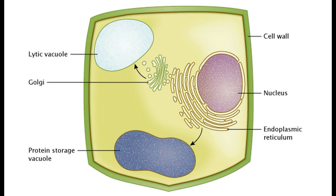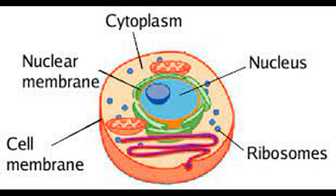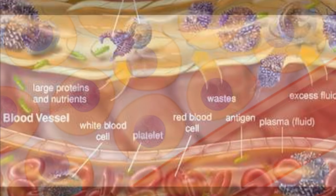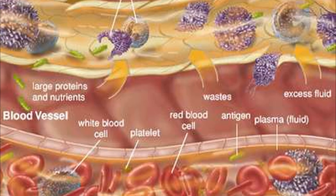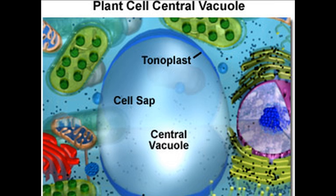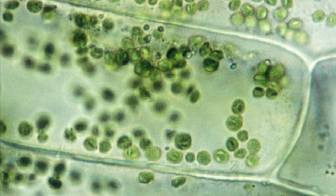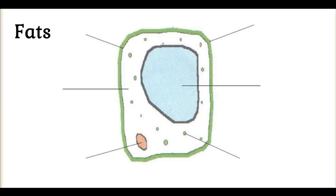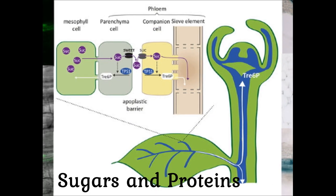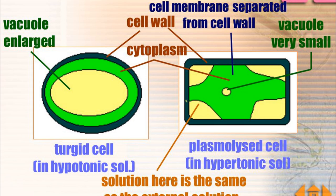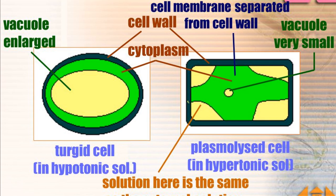Vacuoles are clear spaces present in the cytoplasm enclosed by a membrane. These contain fluid called cell sap in which water-soluble substances are found. In plant cells, vacuoles are large and permanent. They generally contain water, pigments, alkaloids, fats, sugars, and proteins. The presence of water in the vacuoles makes the cells turgid or firm.